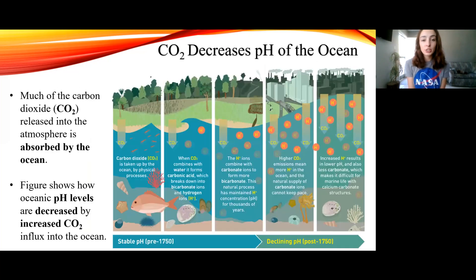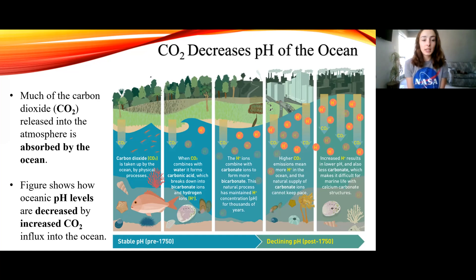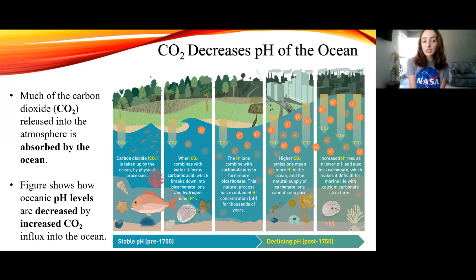First, I'm just going to show you this overall view of how carbon dioxide acidifies the ocean, but we're going to walk through it step by step, so don't worry if you don't understand this yet. We just talked about how carbon dioxide gets absorbed by the ocean, but we're talking about acidification. So what does acidification mean? Well, pH levels are decreasing because of the carbon dioxide going into the ocean. But how is this happening? A pH decrease just means an increase in hydrogen ions. So how do hydrogen ions relate to carbon dioxide? Let's talk about it.